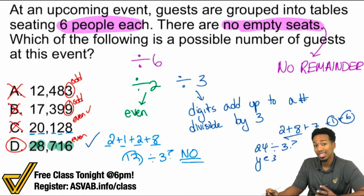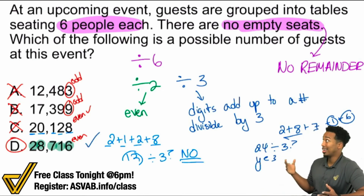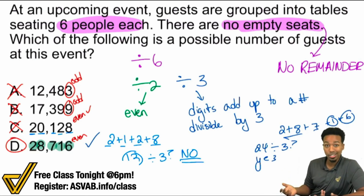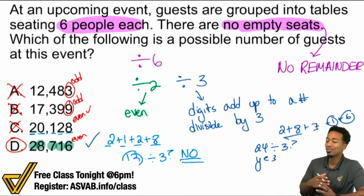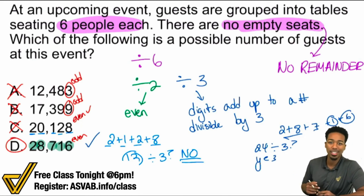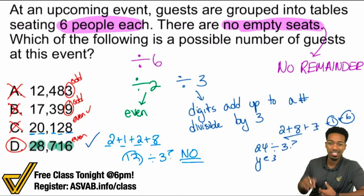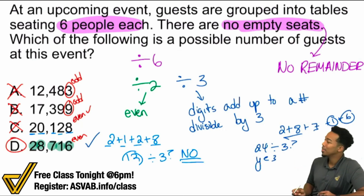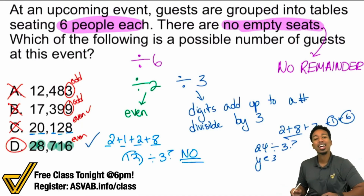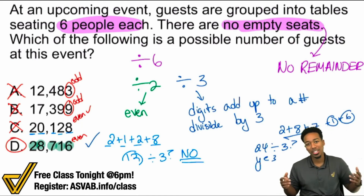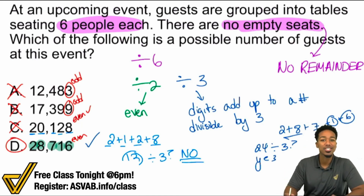Notice how we did it that way instead of actually dividing every single number by six — we didn't need to do that. You can use your rules of divisibility to get this done super quick and super easy. Make sure to like and comment on this so we can keep producing content like this. Class is tonight at 6 p.m. Eastern time — go ahead and register with the link so we can all ace the ASVAB. Let me know if you have any questions. See you then.